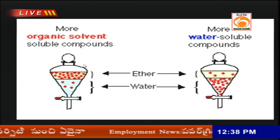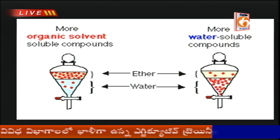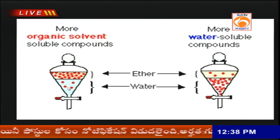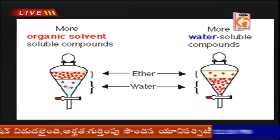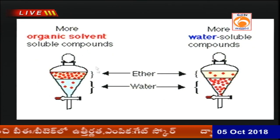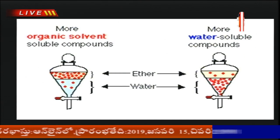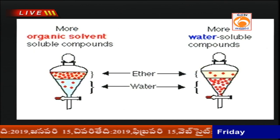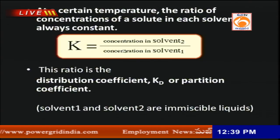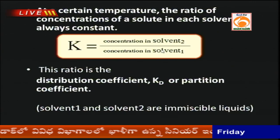Here we can see two immiscible liquids taken — one is the organic solvent (shown in orange, e.g., ether) and the other is a water-like aqueous solution. In this case, the solute is more soluble in the organic layer, whereas another substance is more soluble in the aqueous layer. This behavior is explained by the Nernst distribution law.